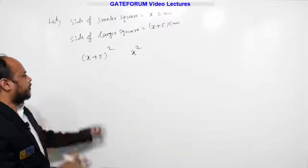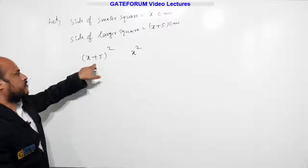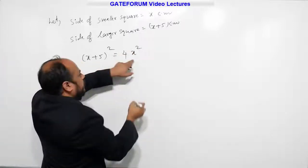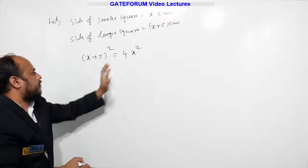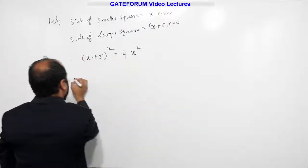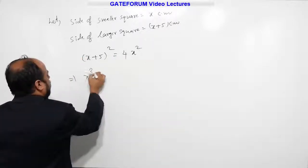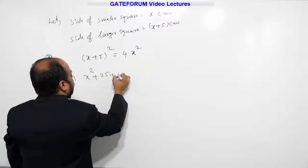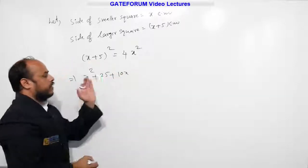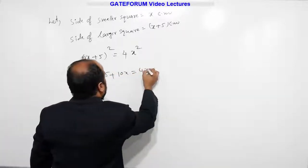From the given information, area of larger square is exactly 4 times the area of smaller square. So I will equate this value. Now solve this equation. This is, I will write x square plus 25 plus 10x using A plus B whole square formula, equal to right side we have 4x square.